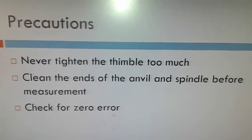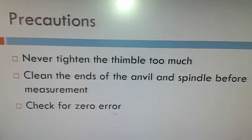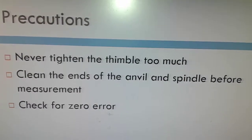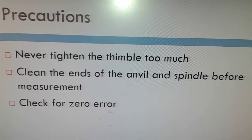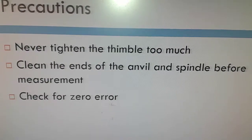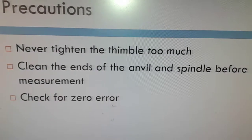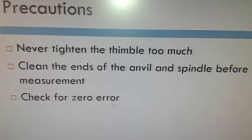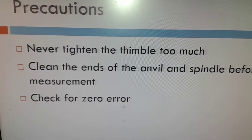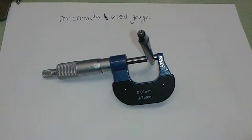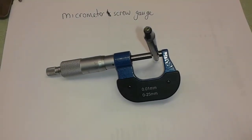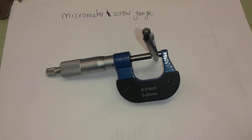Precautions: never tighten the thimble too much, and always clean the anvil and spindle faces before measurement to avoid incorrect readings from dust or small particles. Always check for zero error as shown. Thanks for watching — my name is Alan Tove. Please don't forget to subscribe and like.